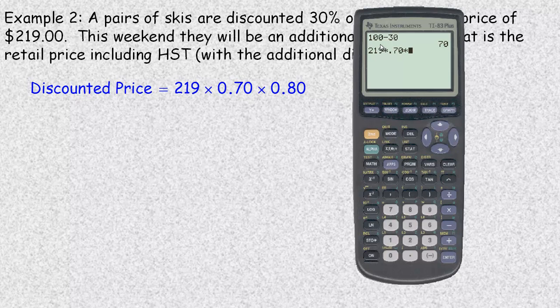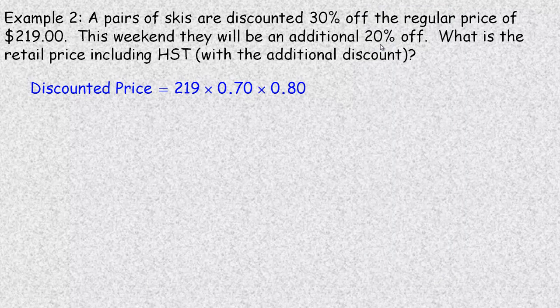So the quickest way to do this calculation is to multiply that 219 by 0.70 and then 0.80. So that actually takes 30% off and then an additional 20% off. So the 219 becomes $122.64.